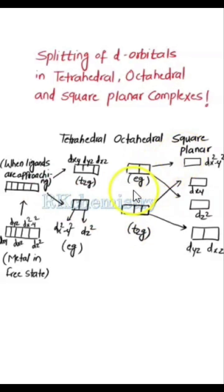In square planar complexes, these d orbitals get split into four energy levels. First one is dyz and dxz. Second is dz². Third is dxy. Fourth is dx²-y².